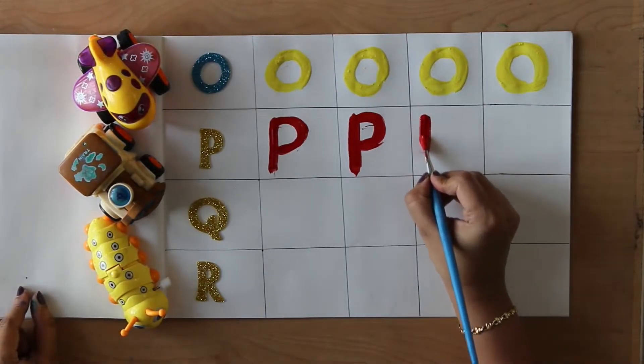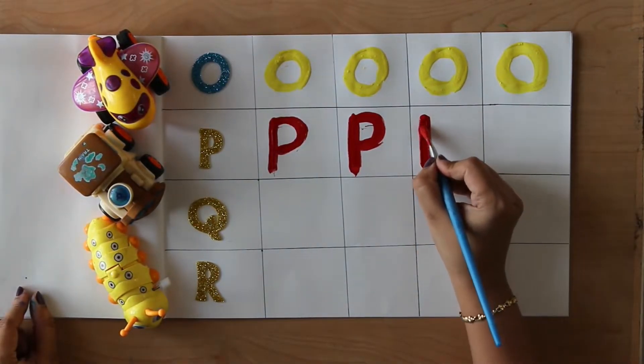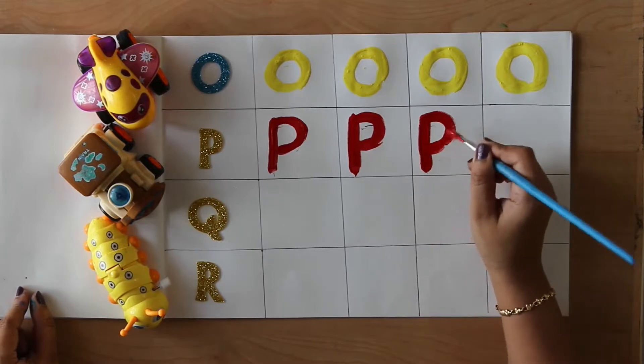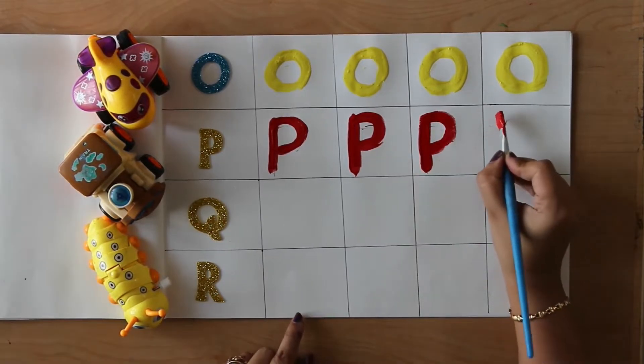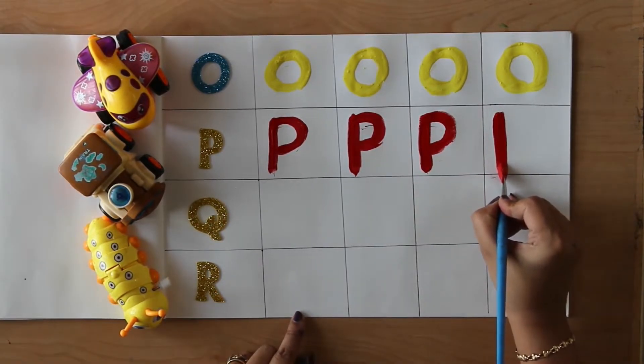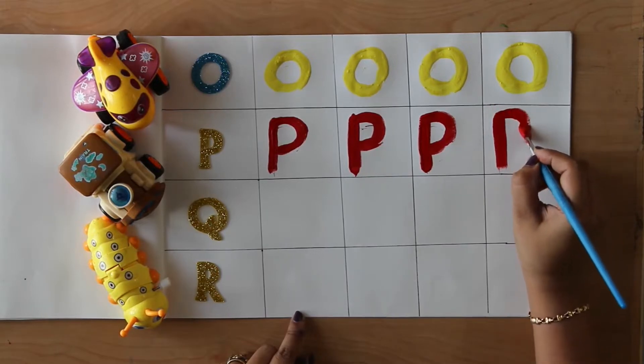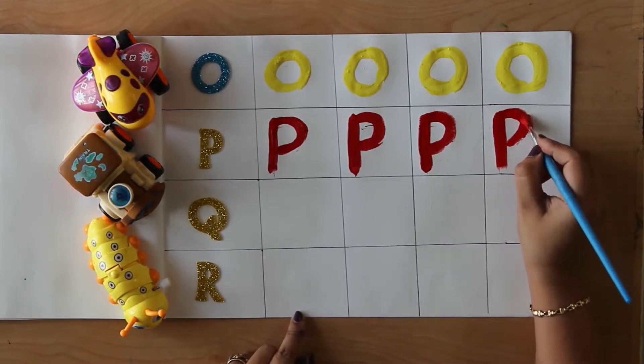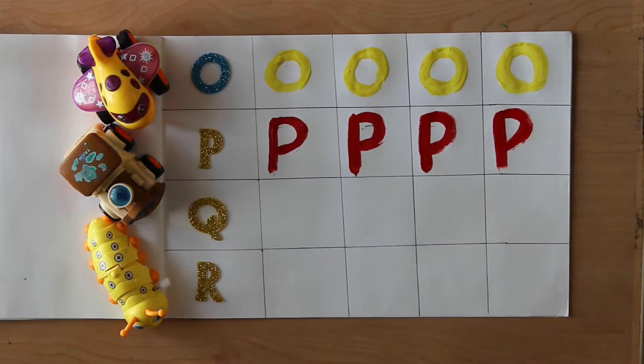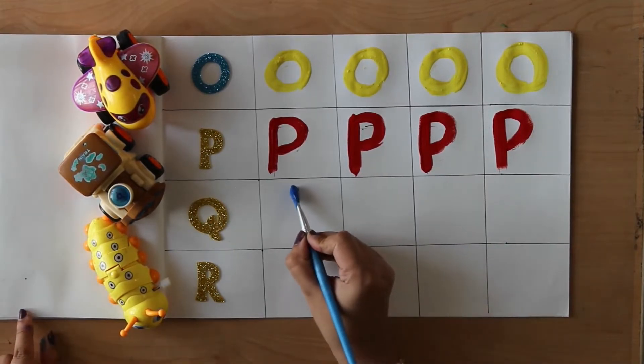P. P for pen. Pen means Kalam. P. P for pigeon. Pigeon means Kabooter. Blue color.